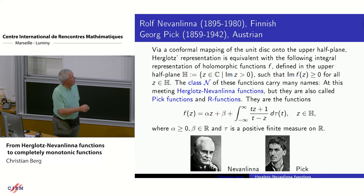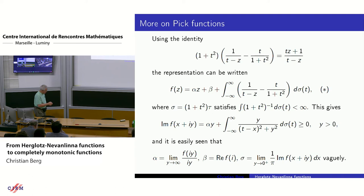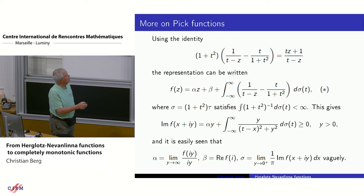The representation depends on three things: an arbitrary real number, an arbitrary non-negative number alpha, and an arbitrary finite measure on the real line. For each real number you have a basic Herglotz-Nevanlinna function, and then you mix them using the finite measure on the real line. There are at least two mathematicians behind this formula: Nevanlinna and Pick. Using a simple identity, we can transform the previous formula to the following formula, which was also given by Anne-Marie.